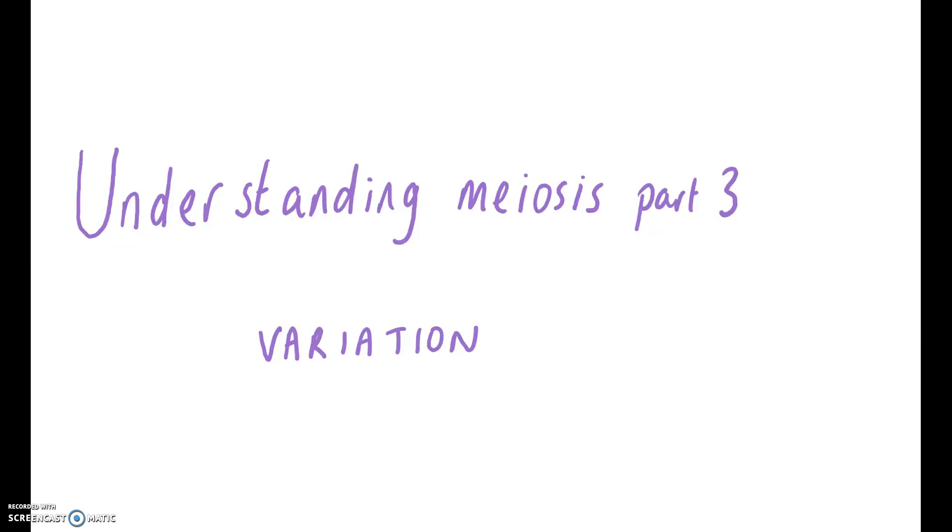And for the final part in the meiosis series, we're going to look at how meiosis causes variation. There are three main ways that meiosis causes variation.